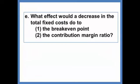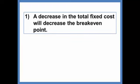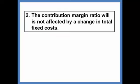What effect would a decrease in total fixed costs have on the break-even point and the contribution margin ratio? We are not given numbers to work with, but you should be able to conceptually identify what will happen. A decrease in fixed costs will decrease the break-even point — any decrease in costs makes it easier to break even, so you have to sell fewer units to do so. The contribution margin ratio is not affected by a change in total fixed costs, since contribution margin is sales minus variable costs, and the contribution margin ratio is contribution margin over sales. Fixed costs do not play a part in either of those calculations.